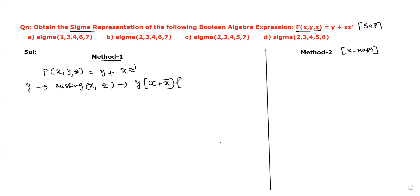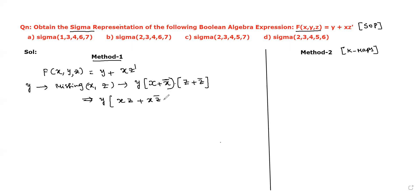y should be written as y multiplied by (x + x'), because x + x' equals 1 according to Boolean algebra. It should also be multiplied with (z + z'), since z + z' also equals 1. So y = y·(x + x')·(z + z'). Now we multiply these two sum terms together, giving: xz + xz' + x'z + x'z'.